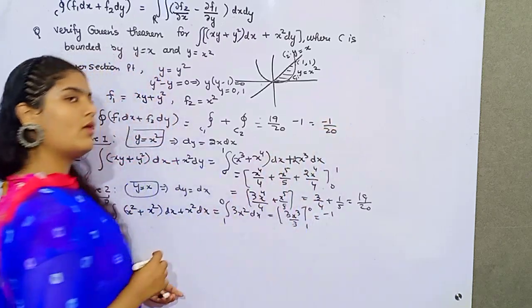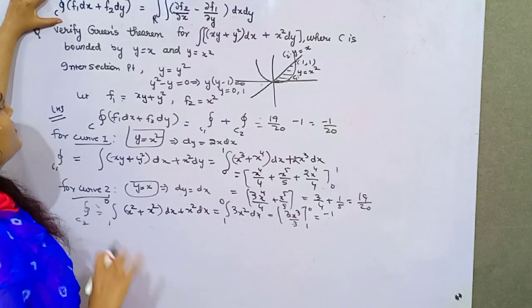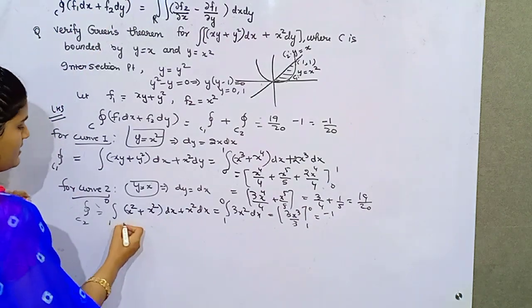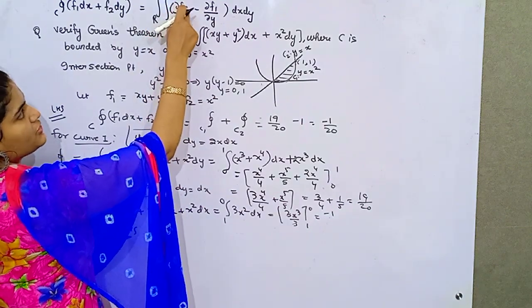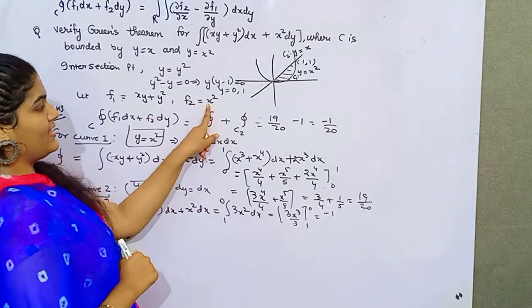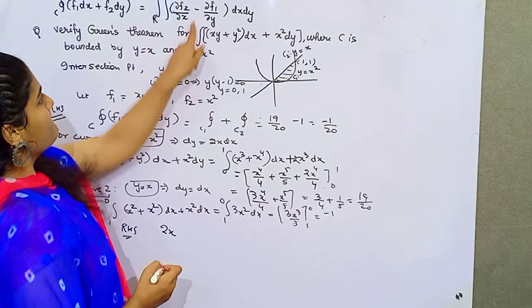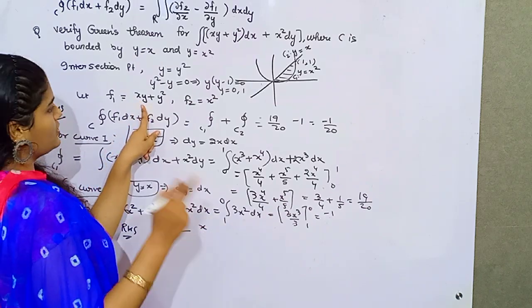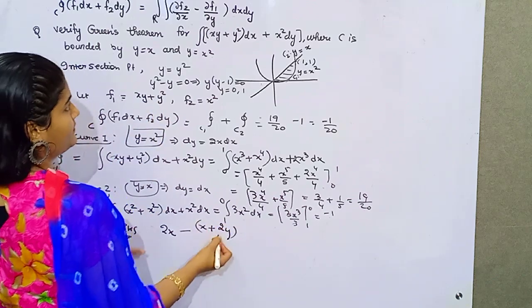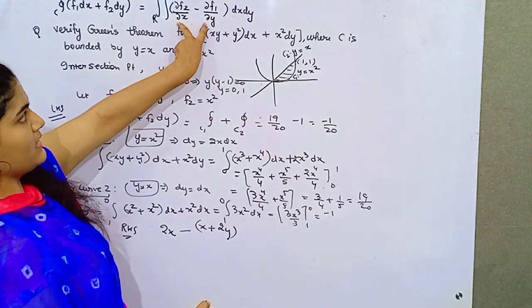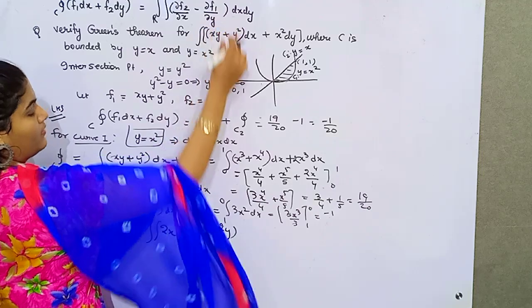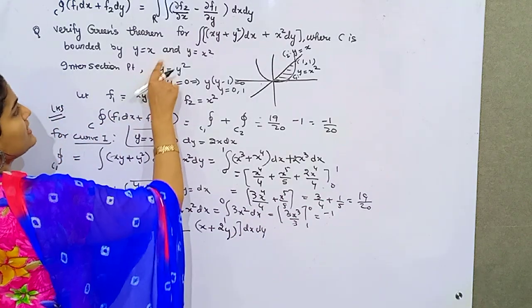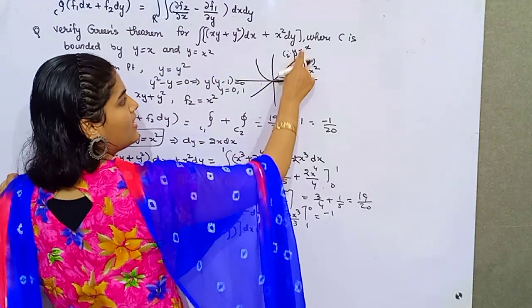Now we need to verify this theorem. We have taken the left hand side and found the value. Now for the right hand side, you can see partial differentiation of f2 with respect to x. What is your f2? This, with respect to x, would be 2x minus partial differentiation of f1 with respect to y. So x will be constant for y differentiation: 1 plus 2y.